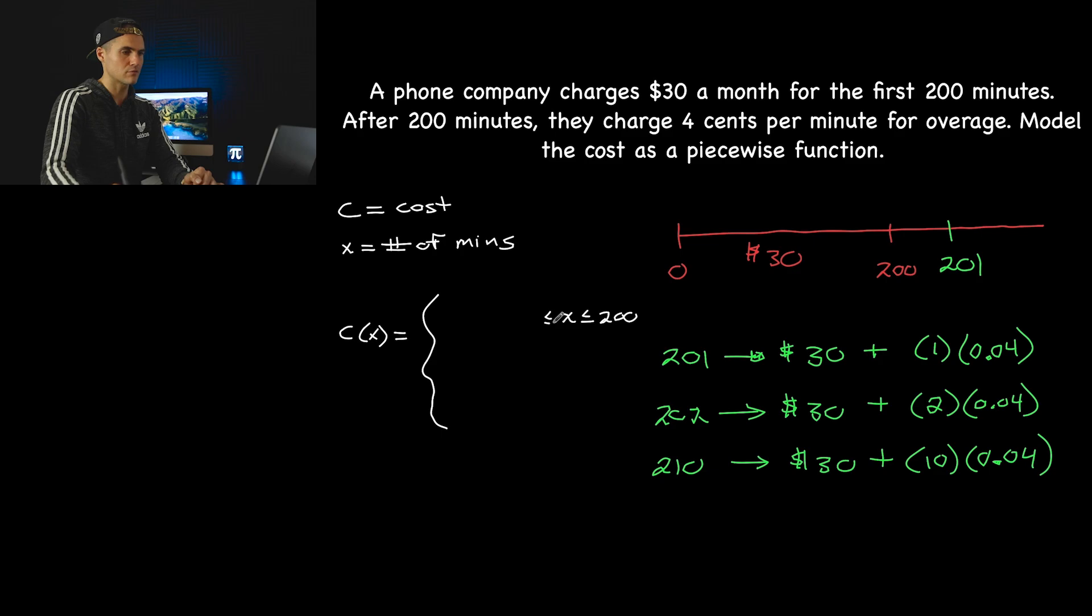So we're going to say C of X, and there's basically going to be two scenarios. Either the number of minutes you're going to use is going to be less than or equal to 200. And actually, if we're doing this properly, we should put greater than or equal to zero because you can't have negative minutes. So the lowest amount is going to be zero. So we would put that as well because this is a word problem. So from zero to 200, including the 200, you're just going to get charged this flat fee of $30.